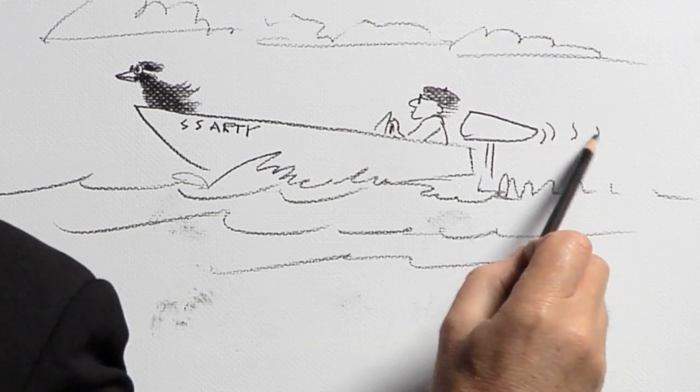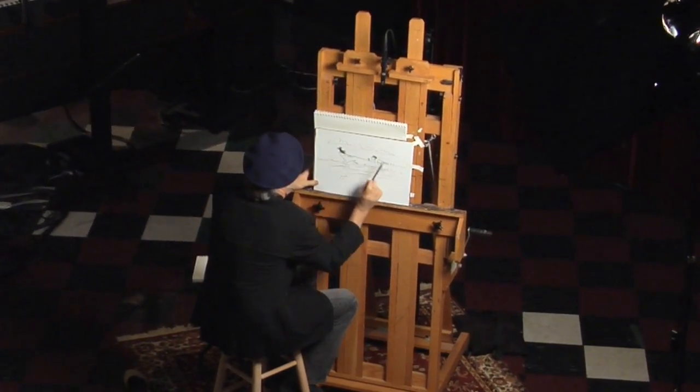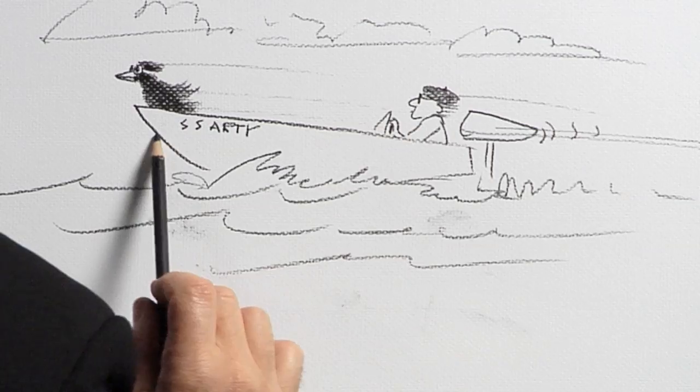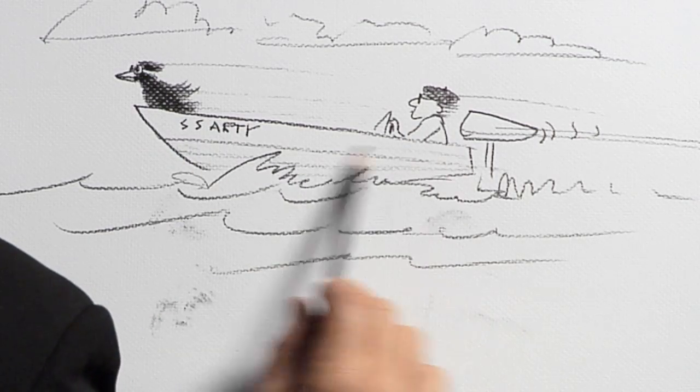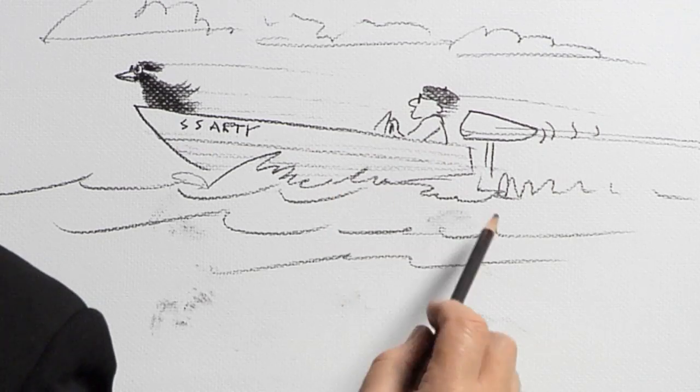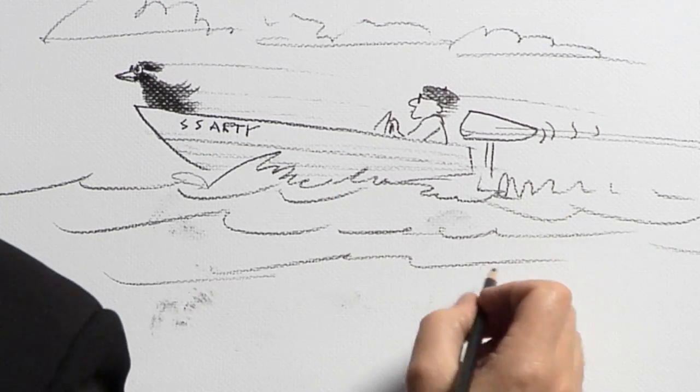There's some clouds. And we need some action lines to make it look like he's going fast. Just like everything else. Put a little shading at the bottom of the boat. Make it look like it's a wooden boat. There you go. Yeah, it looks like it's going fast. Okay. I'll clean this one up a little later. I'm going to go ahead and sign it.